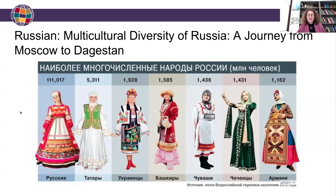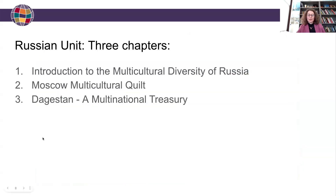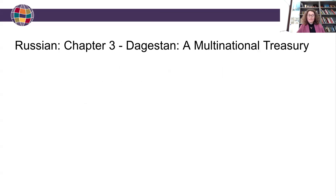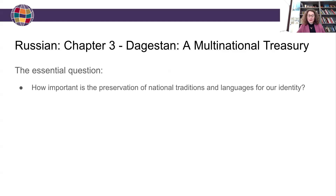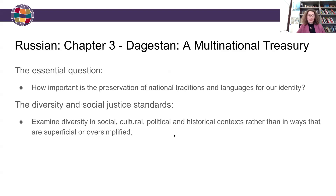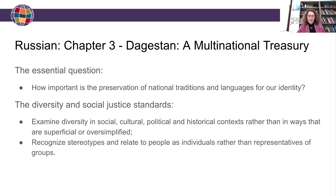The unit consists of three chapters: an introduction to the multicultural diversity of Russia, Moscow as a multicultural quilt, and Dagestan as a multinational treasury. All in all, we spent 15 days working on the unit, and it culminated in a presentation. The essential question guiding the Dagestan chapter is: how important is the preservation of national traditions and languages for our identity? The diversity and social justice standards highlighted are examining diversity in social, cultural, political, and historical contexts — rather than superficially — and recognizing stereotypes and relating to people as individuals rather than representatives of groups.